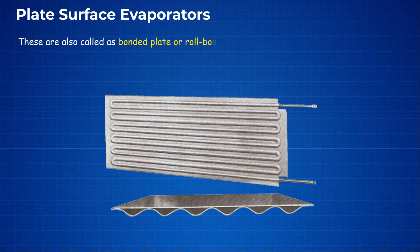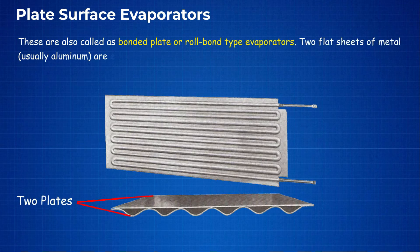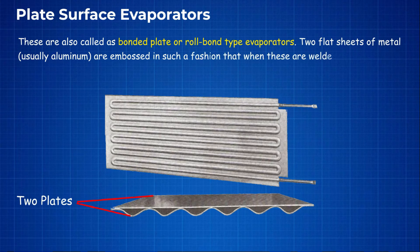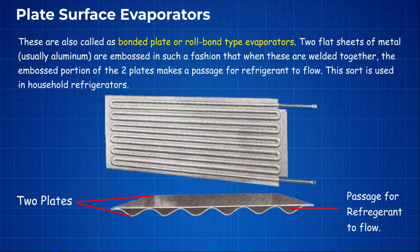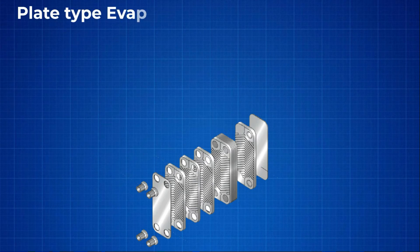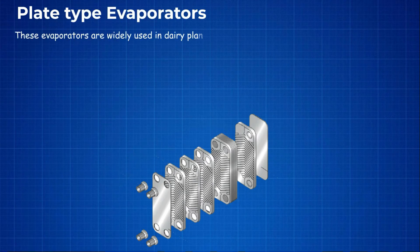Plate surface evaporators, also called bonded plates or roll bond type evaporators, consist of two flat sheets of metal, usually aluminum, embossed in such a fashion that when these are welded together, the embossed portion of the two plates makes a passage for refrigerant to flow. This type is used in household refrigerators.